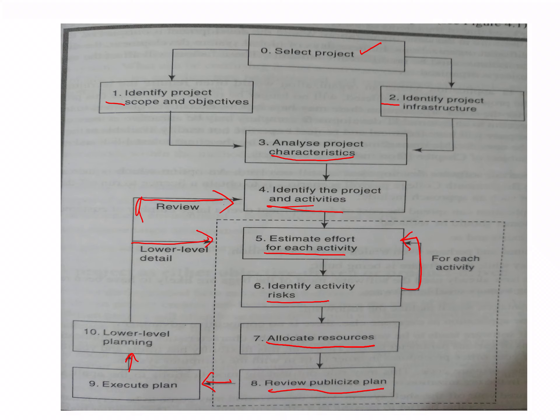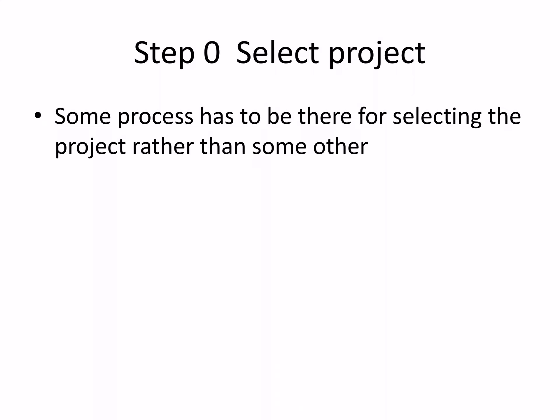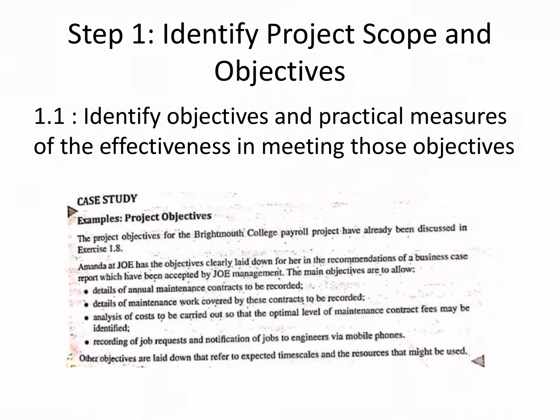Pay attention to how this flow works. These are the 10 steps — a screenshot of your book is shown and the PDF has been shared with you. Remember the steps and their sub-steps. Step zero: select a project. A company will always have options and must choose which project is feasible from among those available.